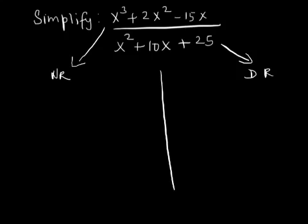The first step of factoring the numerator would be to factor out the common factor for all three terms, x cubed plus 2x squared and negative 15x, and that happens to be x. Therefore, the numerator can be rewritten as x times x squared plus 2x minus 15.